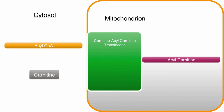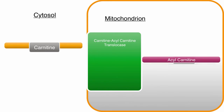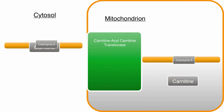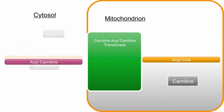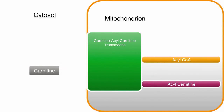After the acyl-carnitine has entered the mitochondrion, the tradeoff is reversed by breaking off the carnitine and adding back a coenzyme A from inside the mitochondrion. The carnitine then goes back out of the mitochondrion using the same carnitine shuttle system to grab another acyl molecule.